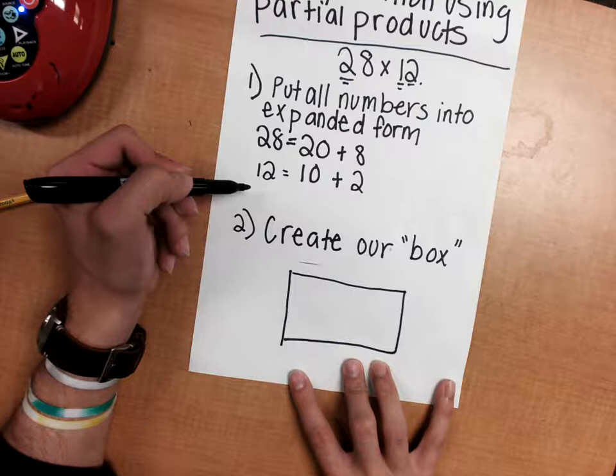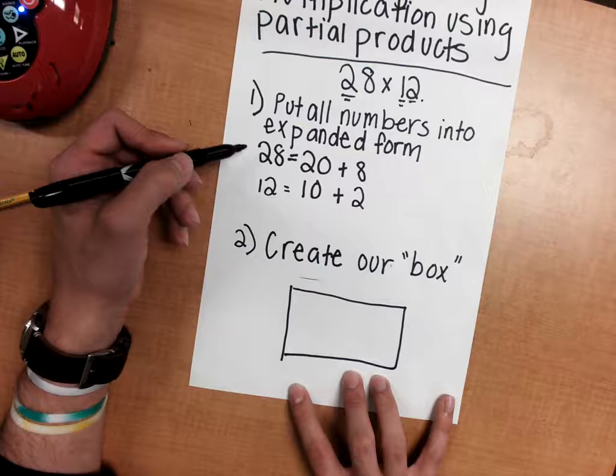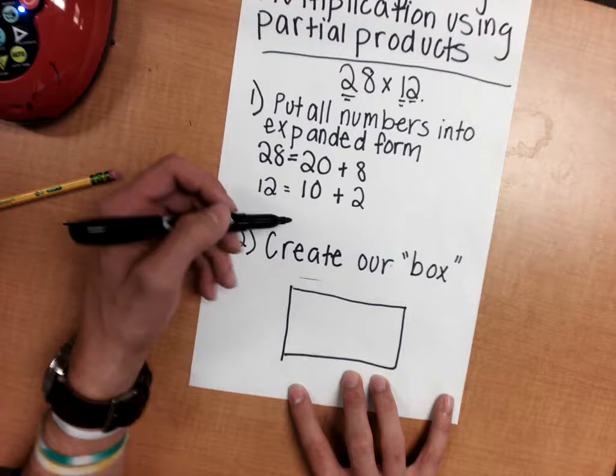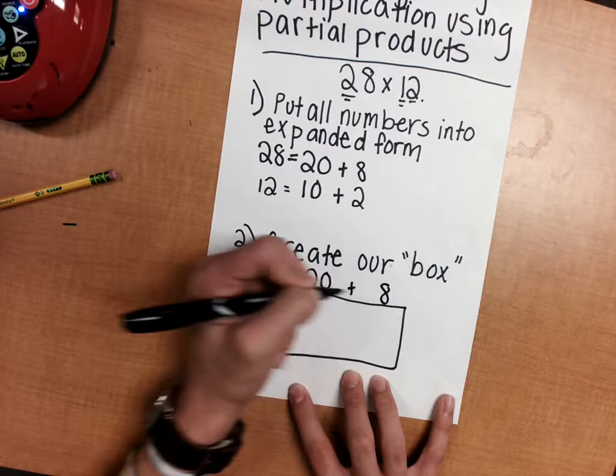As you see in our first step, we put it in expanded notation. So we're going to use this expanded notation for each of our numbers. On top, I'm going to put 20 plus 8, and on my side, I'm going to put 10 plus 2.